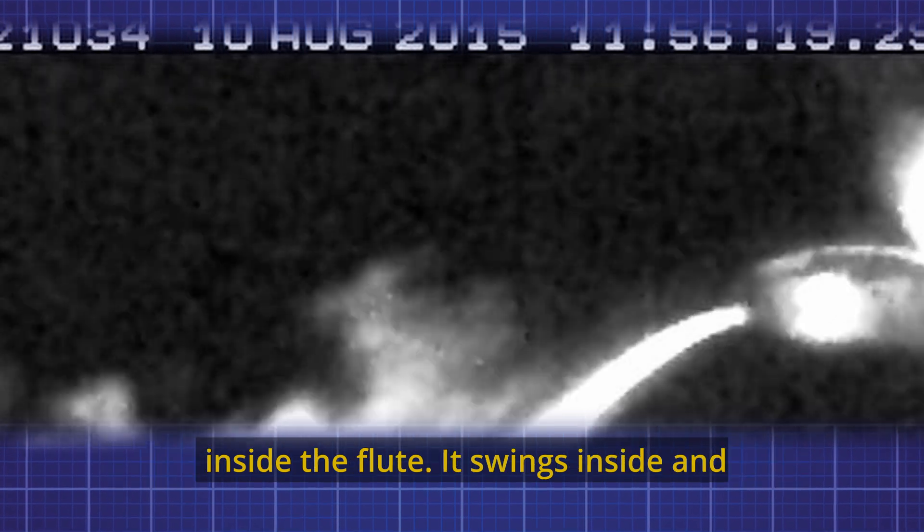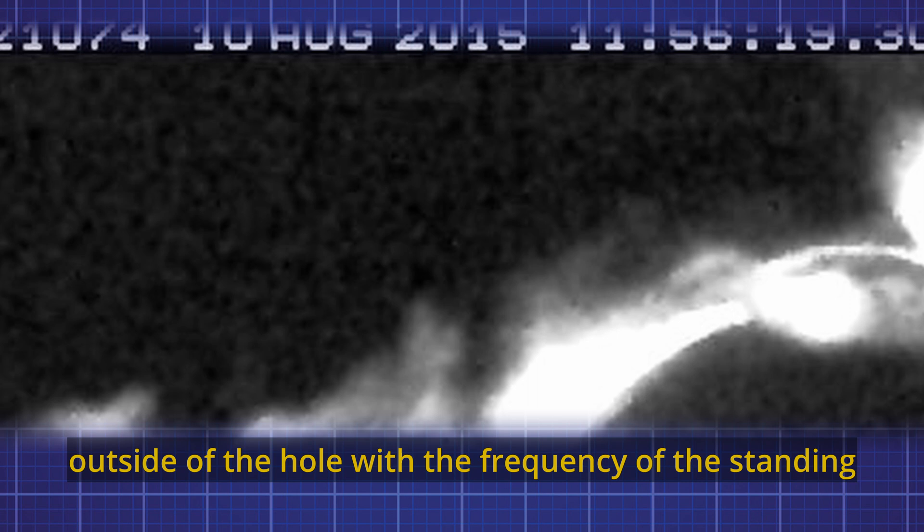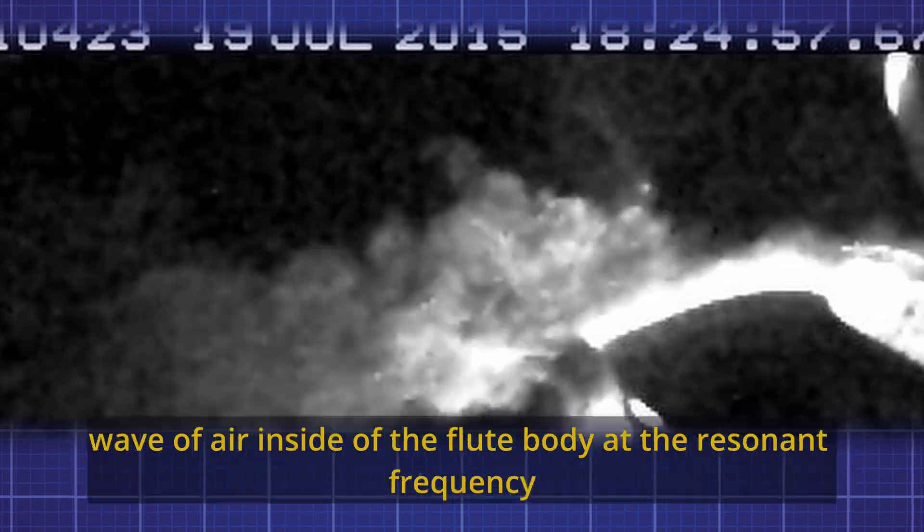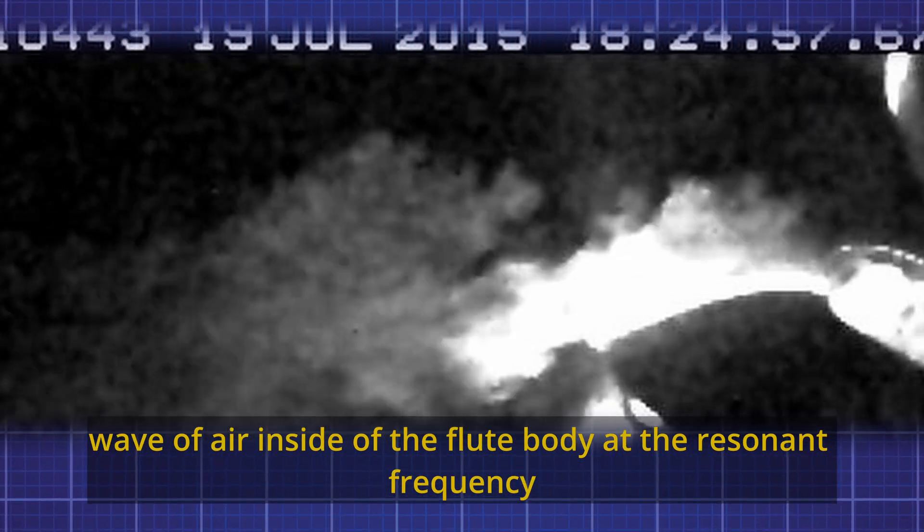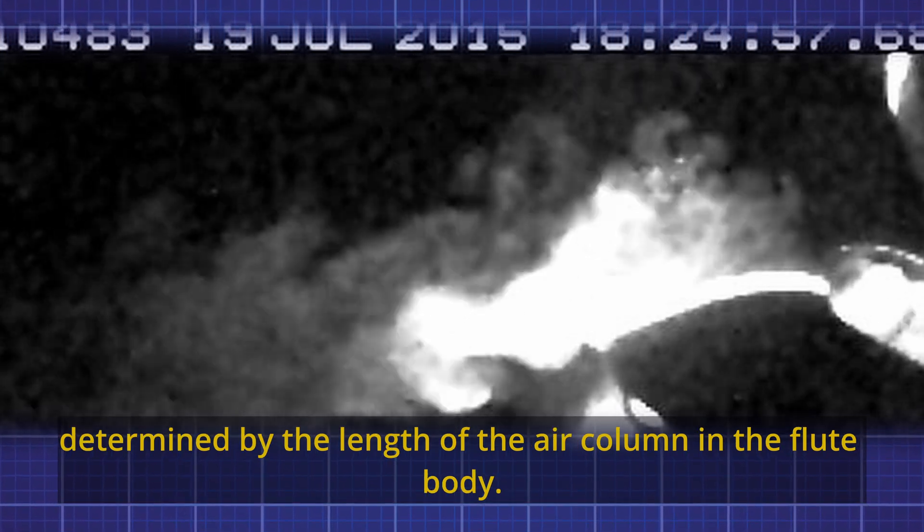Rather than being split into two steady half streams, the air jet is affected by a pulsating pressure wave inside the flute. It swings inside and outside of the hole with the frequency of the standing wave of air inside the flute body at the resonant frequency determined by the length of the air column in the flute body.